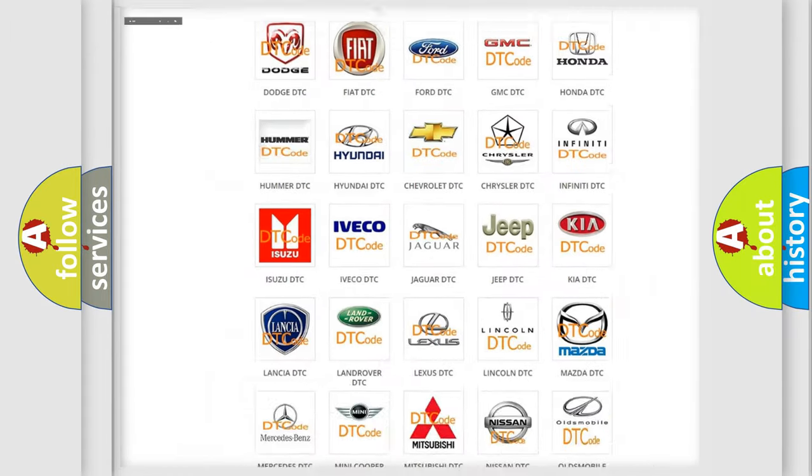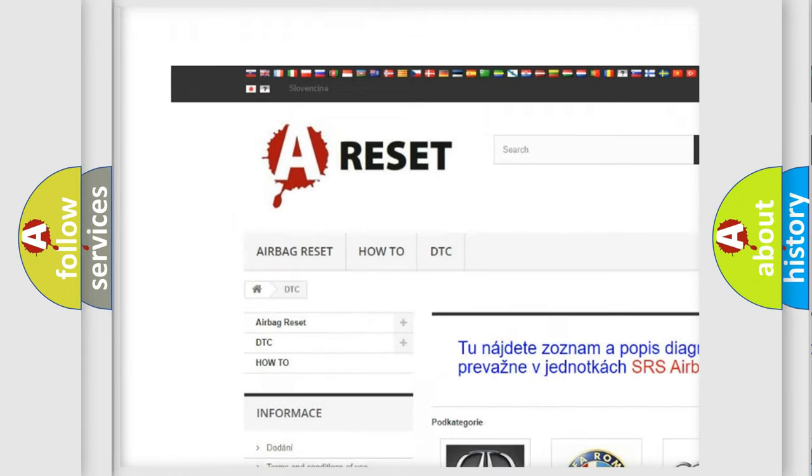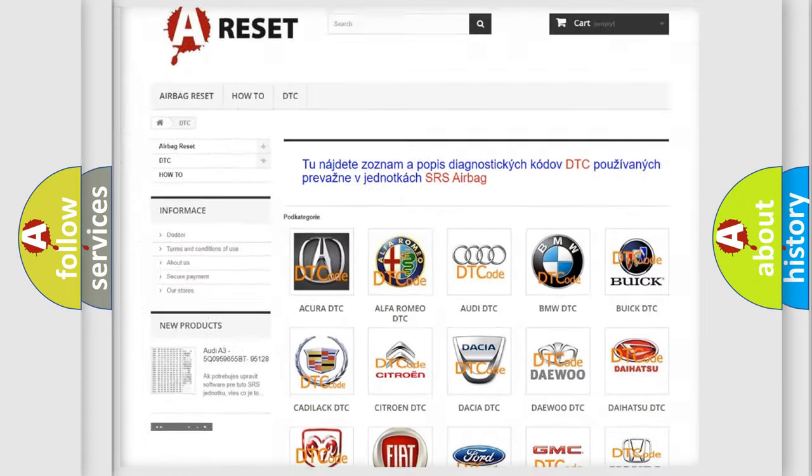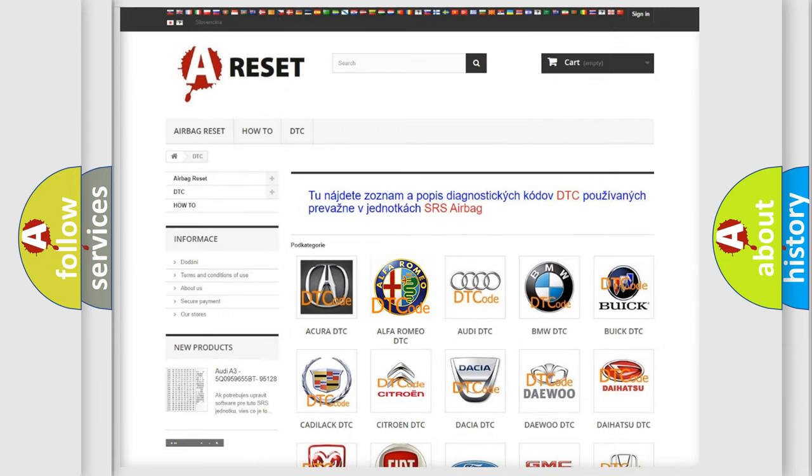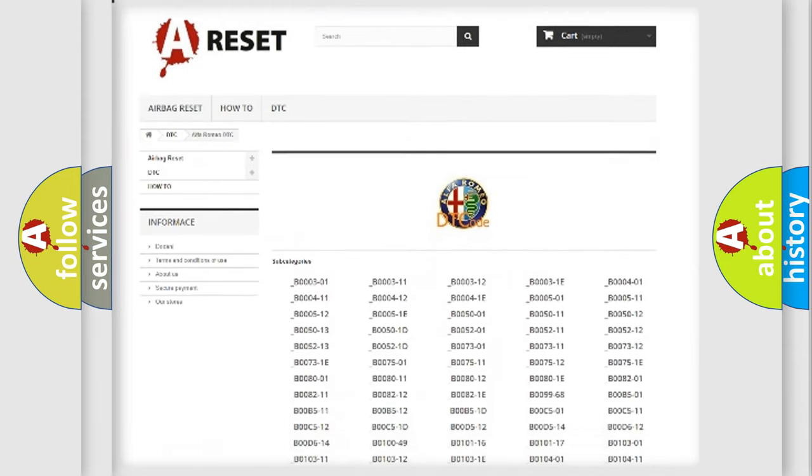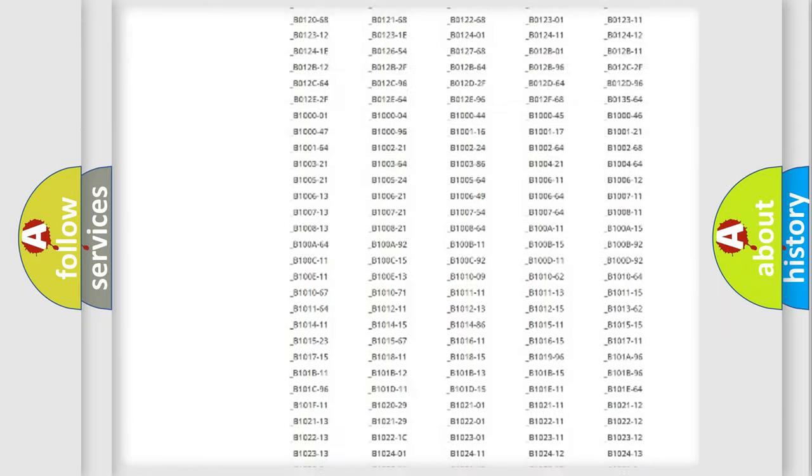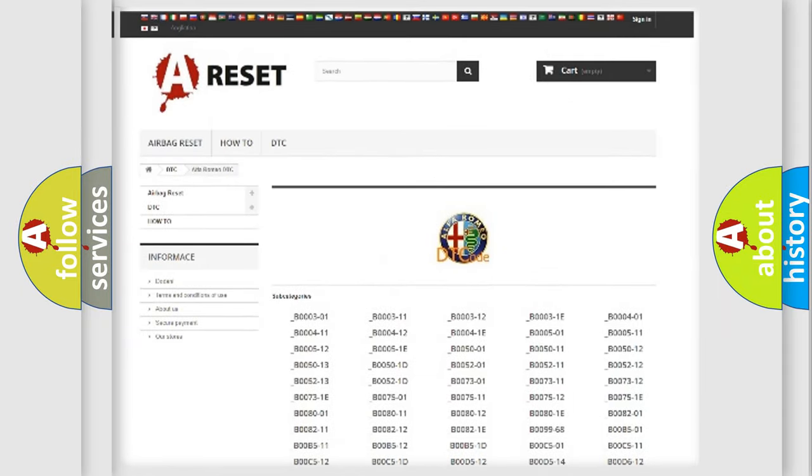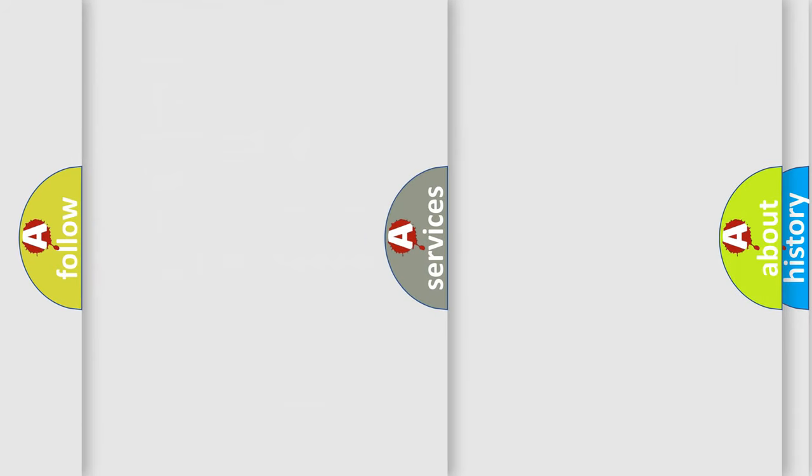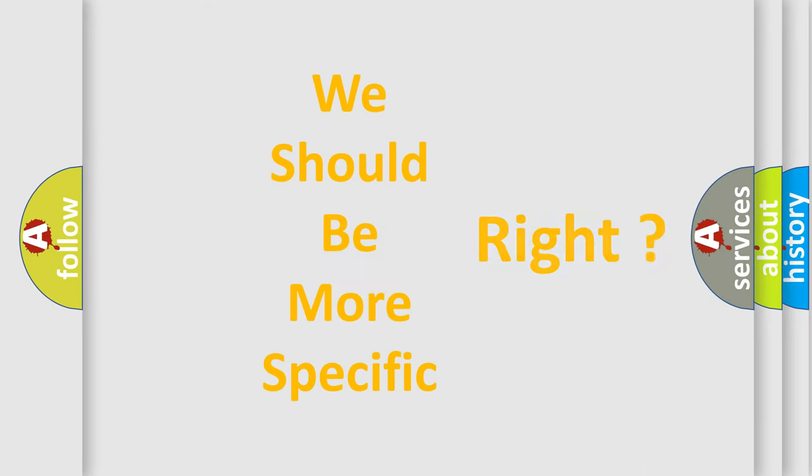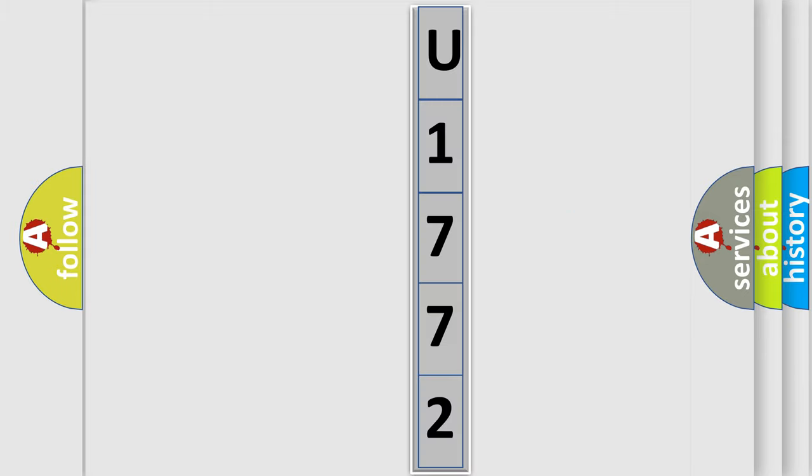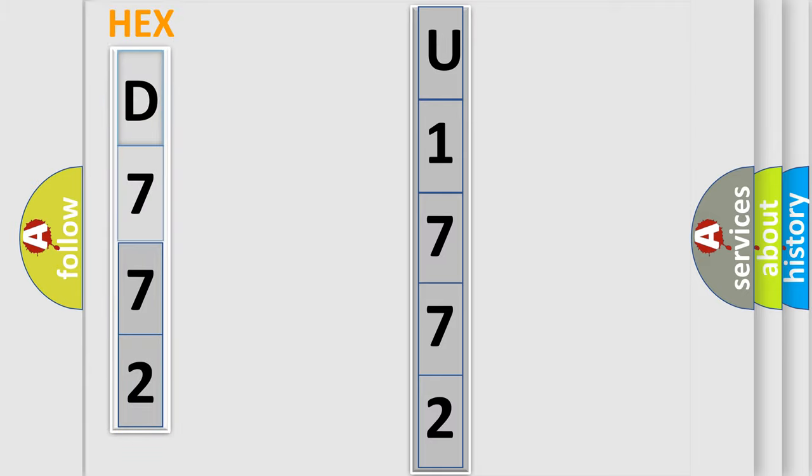Our website airbagreset.sk produces useful videos for you. You do not have to go through the OBD2 protocol anymore to know how to troubleshoot any car breakdown. You will find all the diagnostic codes that can be diagnosed in Alfa Romeo vehicles, also many other useful things. The following demonstration will help you look into the world of software for car control units.